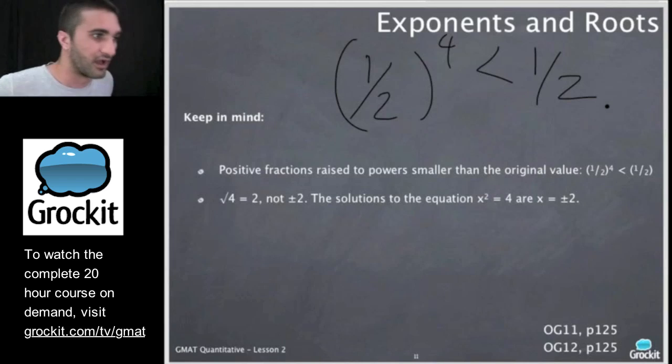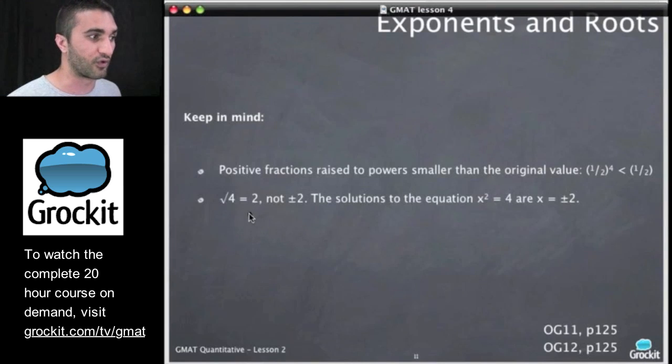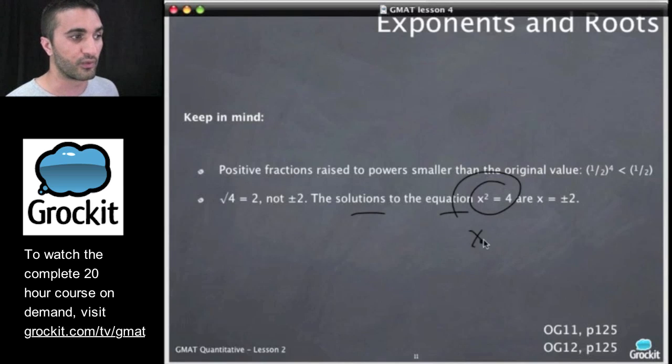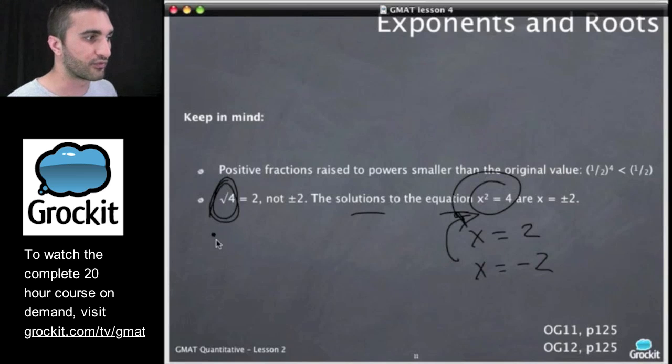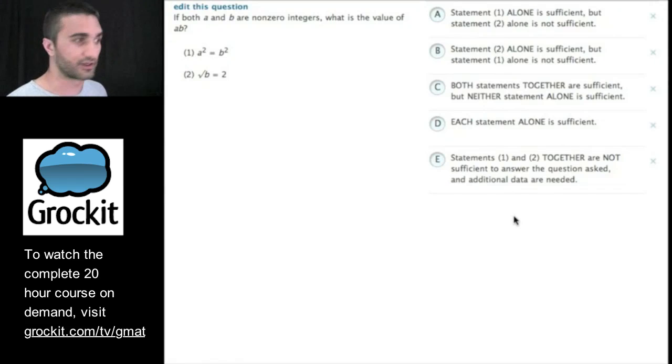Positive fractions raised to powers are smaller than the original value. Also, keep in mind that the root of four equals two. It does not equal plus or minus two. Rather, the place we see the whole plus or minus two thing go down is when we're trying to find the solution to this equation of x squared equals four. We know that the values of x are that they could be two, but x could also be negative two, and this equation would be satisfied. So the root of four is not plus or minus two. Rather, the solutions to this equation are that x can equal two, and x can equal negative two.